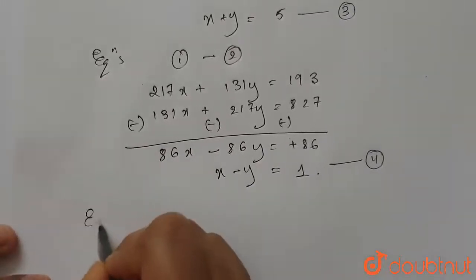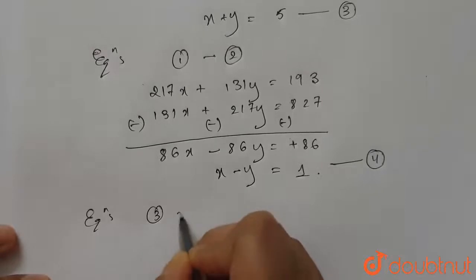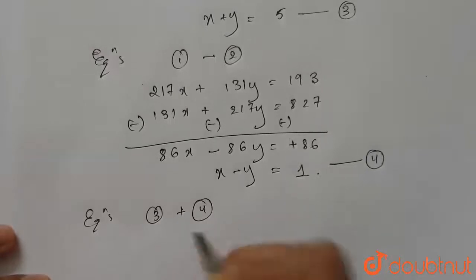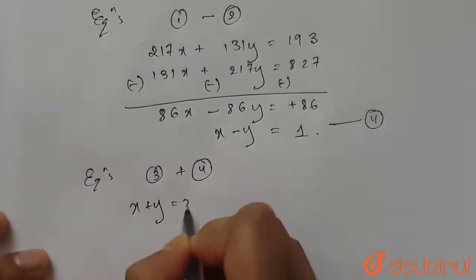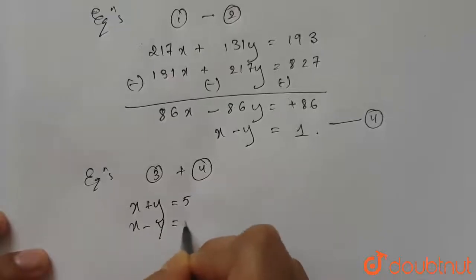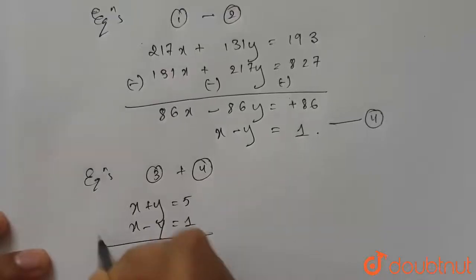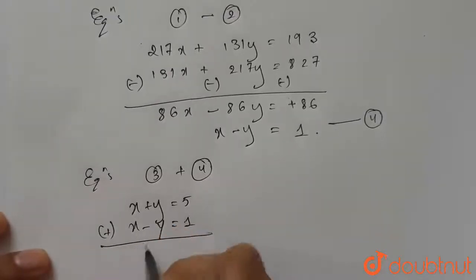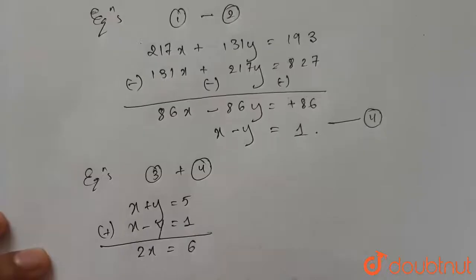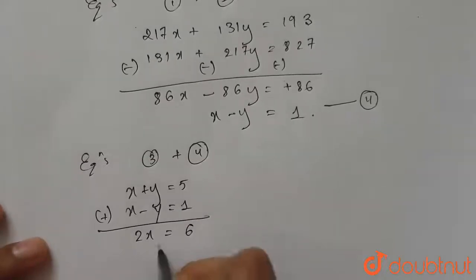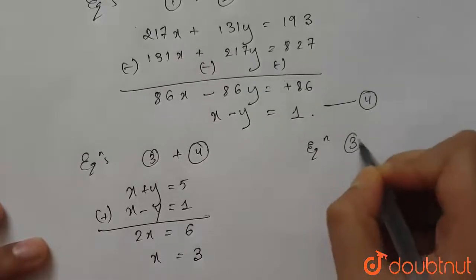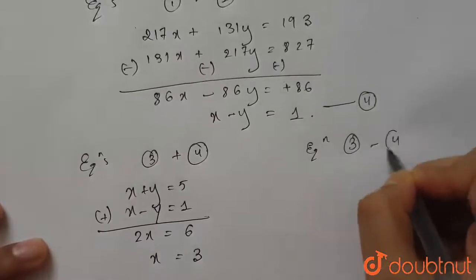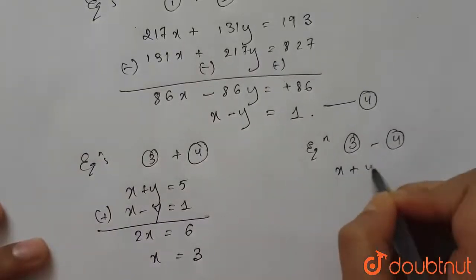Now let's add equations 3 and 4. We have x + y = 5 and x - y = 1. After adding, we get 2x = 6, therefore x = 6/2, which equals 3.